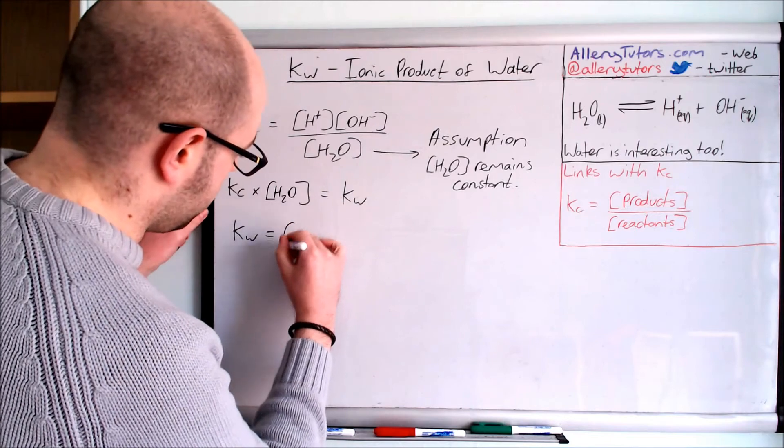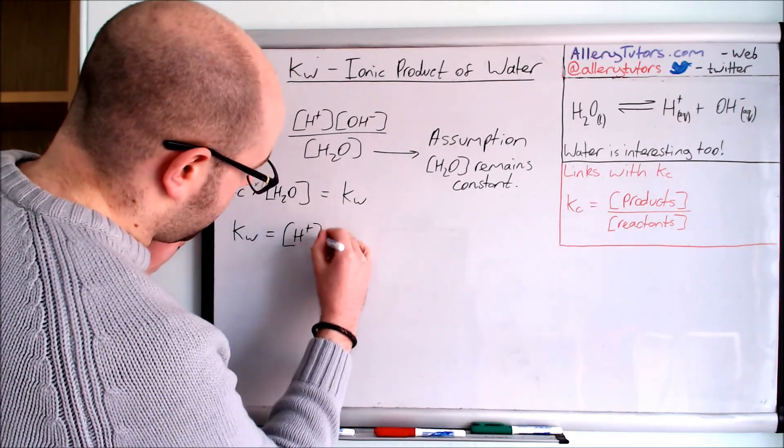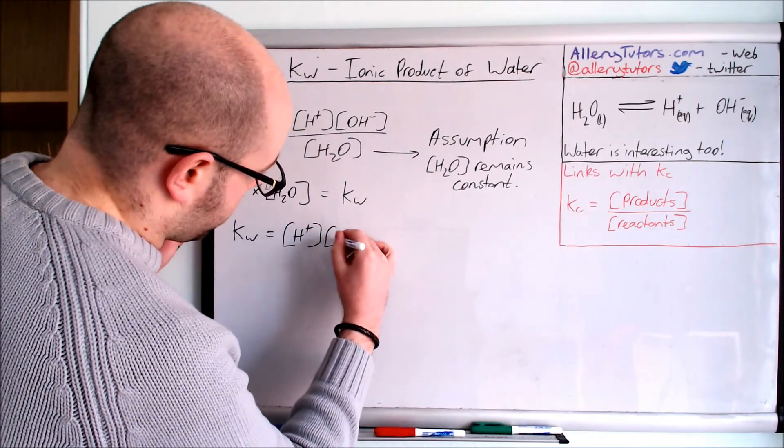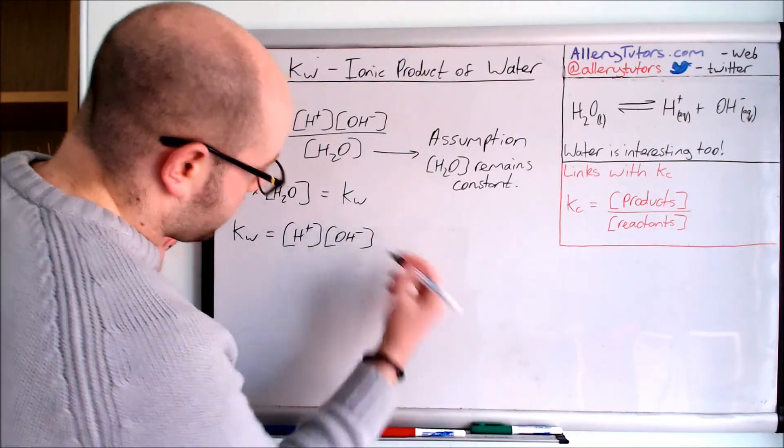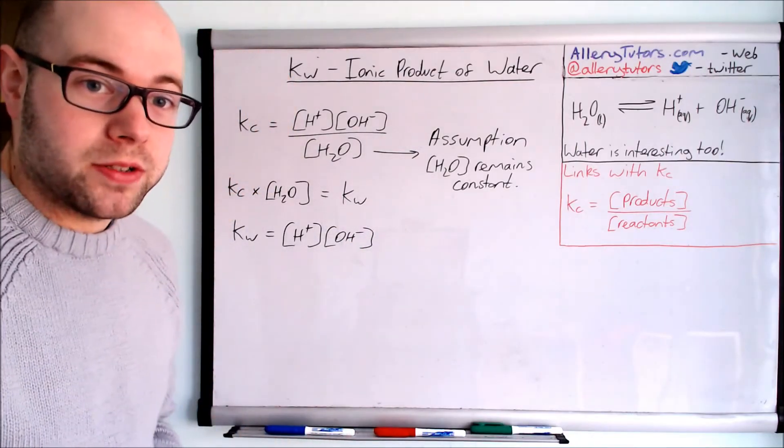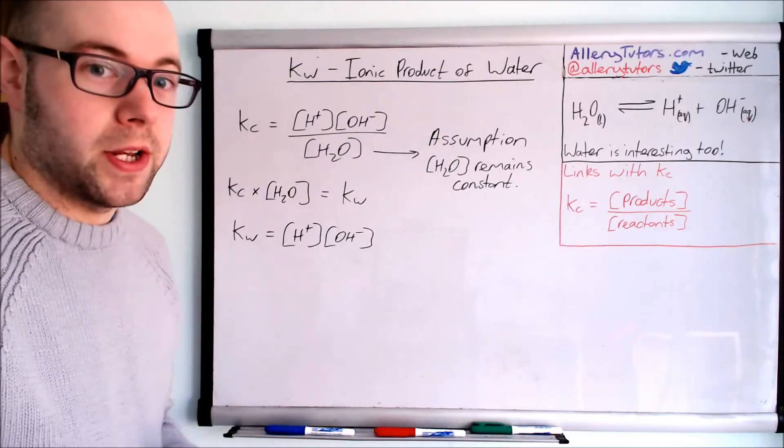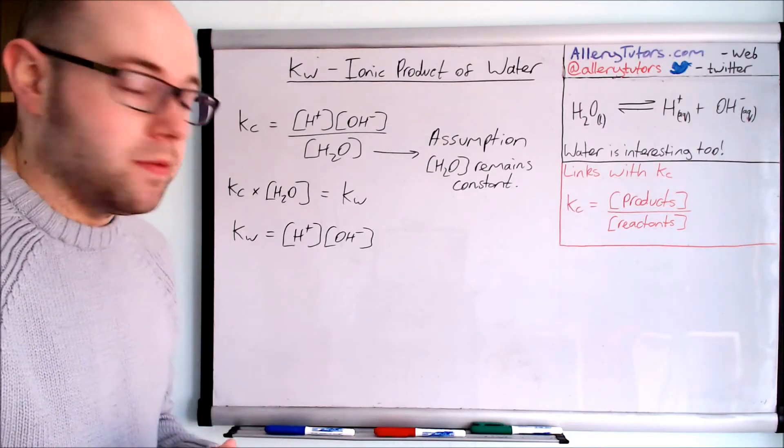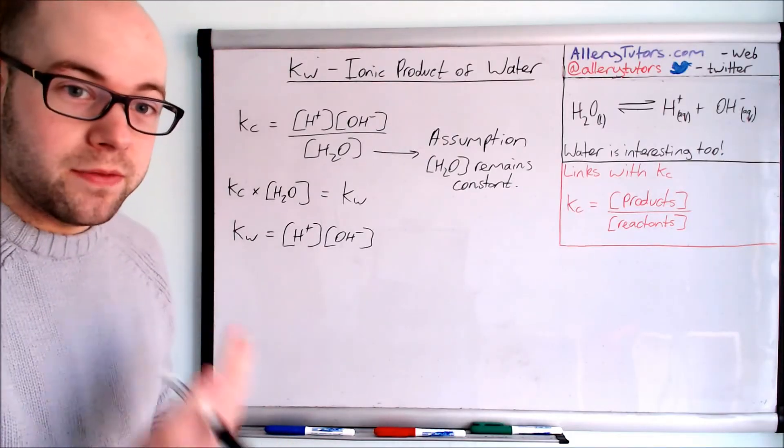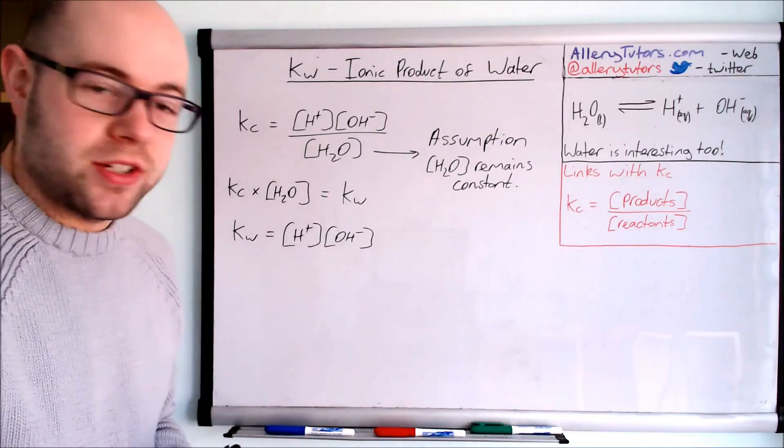Kw equals H plus times OH minus. That is where we get our ionic product of water. Here's our ions and their product of a water molecule. We use the word Kw, W standing for water, and here's our expression.